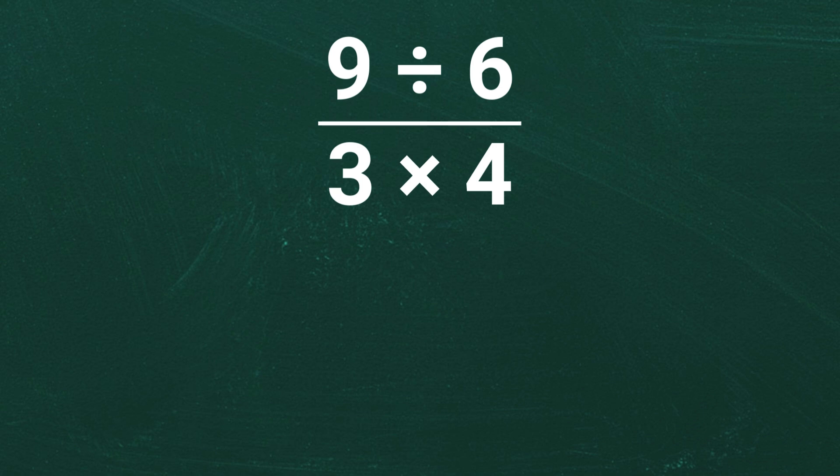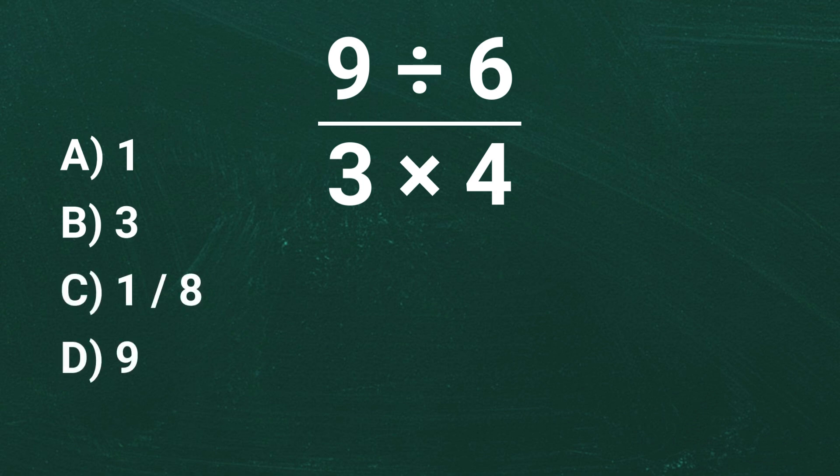The problem is 9 divided by 6 all divided by 3 times 4. Your answer choices are A) 1, B) 3, C) 1/8 and D) 9. Take a moment to look at it carefully and think it through.